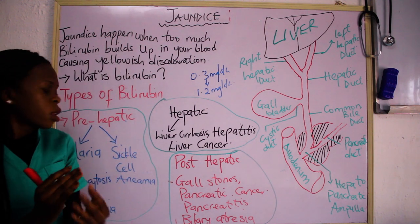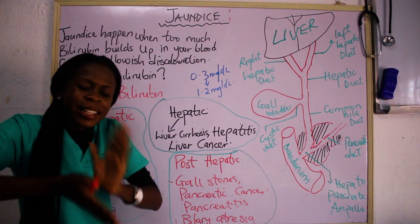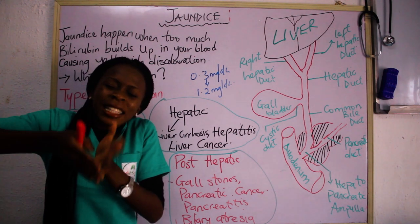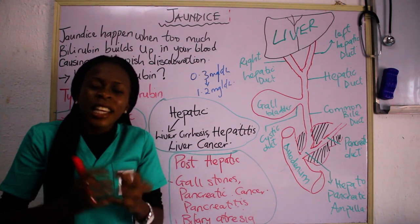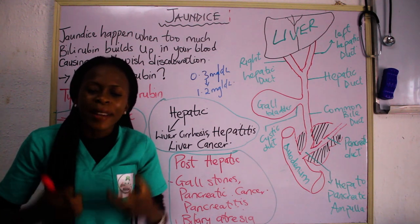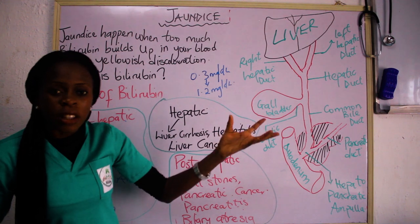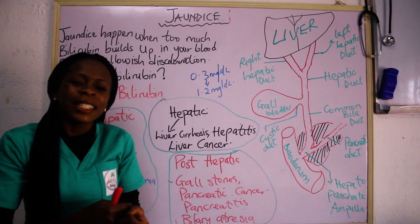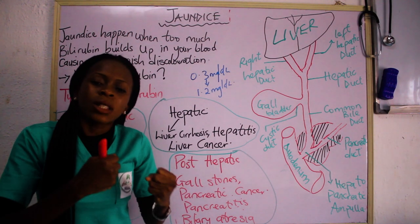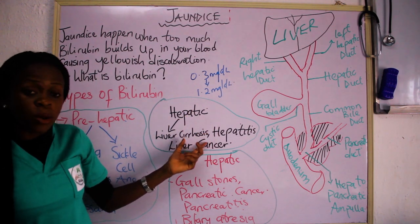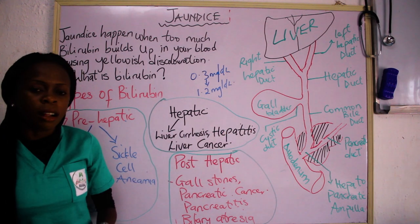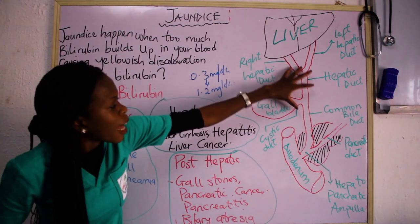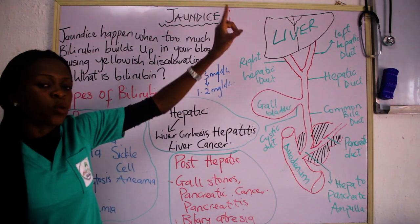To summarize: pre-hepatic jaundice involves the excessive breakdown of red blood cells producing excess bilirubin. Hepatic jaundice involves a problem inside the liver that prevents it from processing bilirubin. Post-hepatic jaundice involves anything affecting the biliary tract that obstructs the flow of bile and bilirubin out of the body.